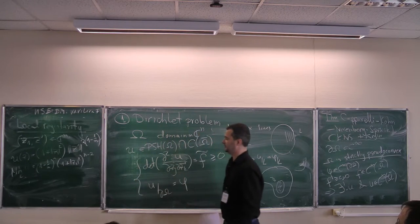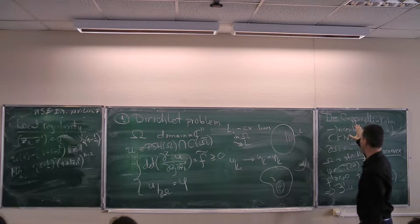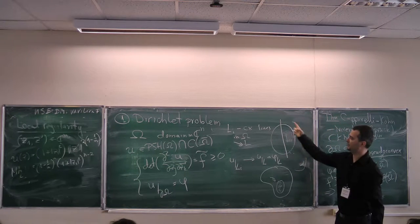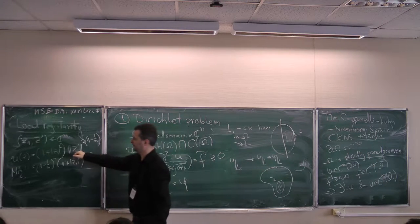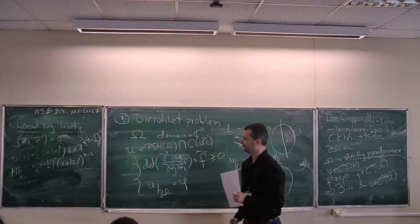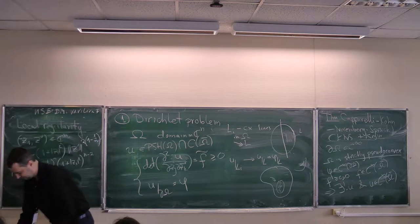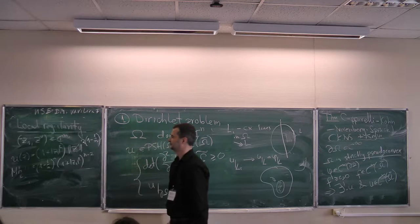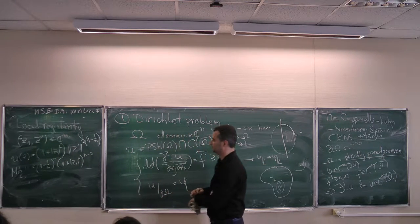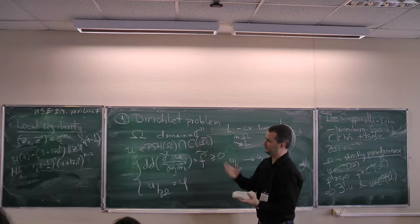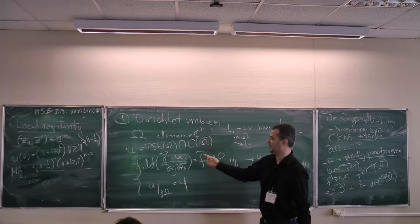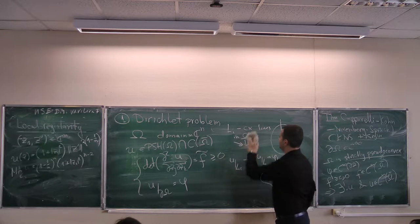This example does not violate the CKNS theorem because the singularities are global — you cannot have smooth domain data such that this singular solution lives inside. There is one interesting difference with the real theory: the Pogorelov original example in the real case only works in dimension 3 and up — it doesn't work in dimension 2, where a theorem of Alexandrov gives local regularity. But in the complex case, it already works in dimension 2 and higher. For dimension 1 it's the Poisson equation, so we trivially get local smoothness.